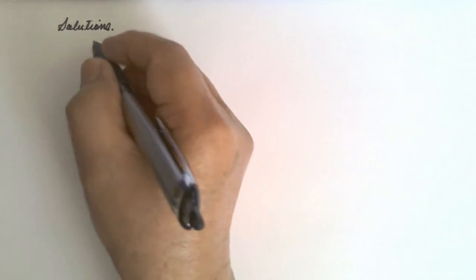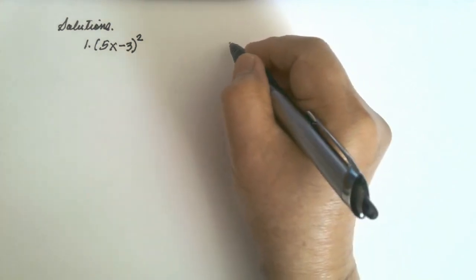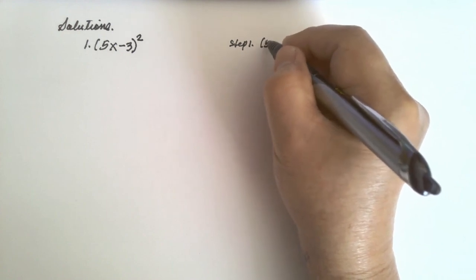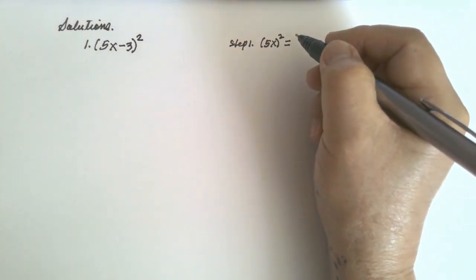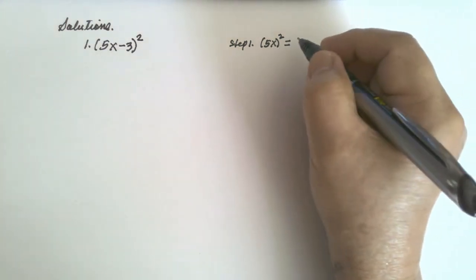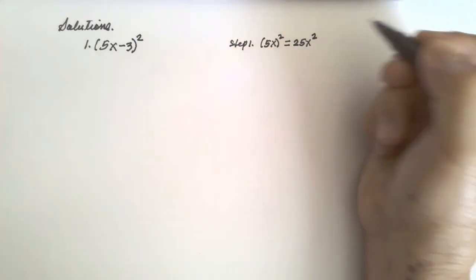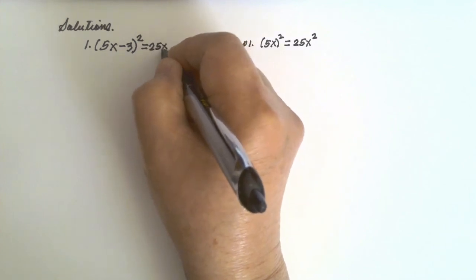Let us solve number one: (5x − 3) squared. Step number one — square the first term: (5x) squared means 5x times 5x, which equals 25x squared.